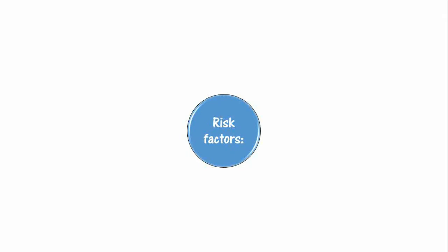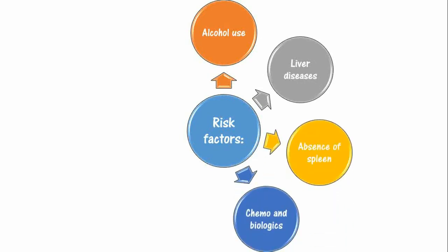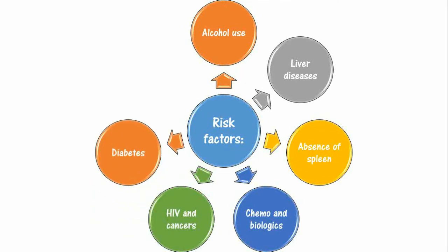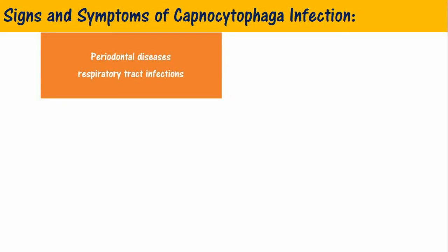Anybody who comes in contact with animal saliva can become infected with Capnocytophaga bacteria, but conditions which lead to an immunocompromised state are usually associated with increased risk of these infections. These conditions are: alcohol use, liver diseases, patients without a spleen, use of medicines which cause immunocompromised states such as chemotherapy and biologics, diseases which can cause immunosuppression such as HIV and cancers, diabetes, and pregnancy.